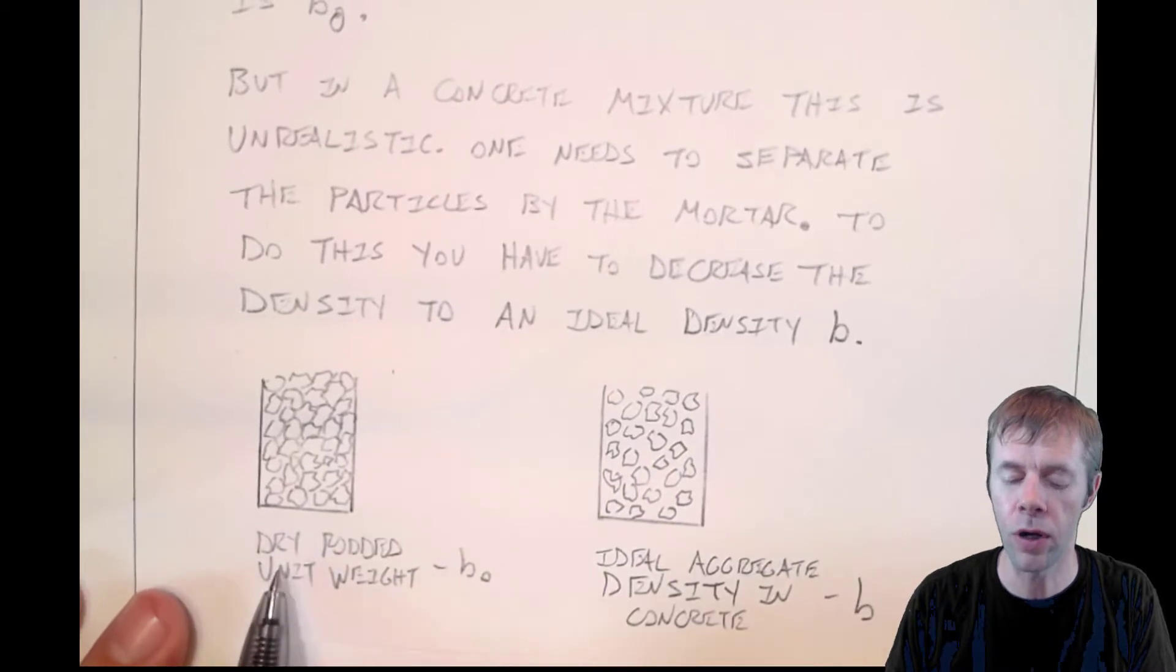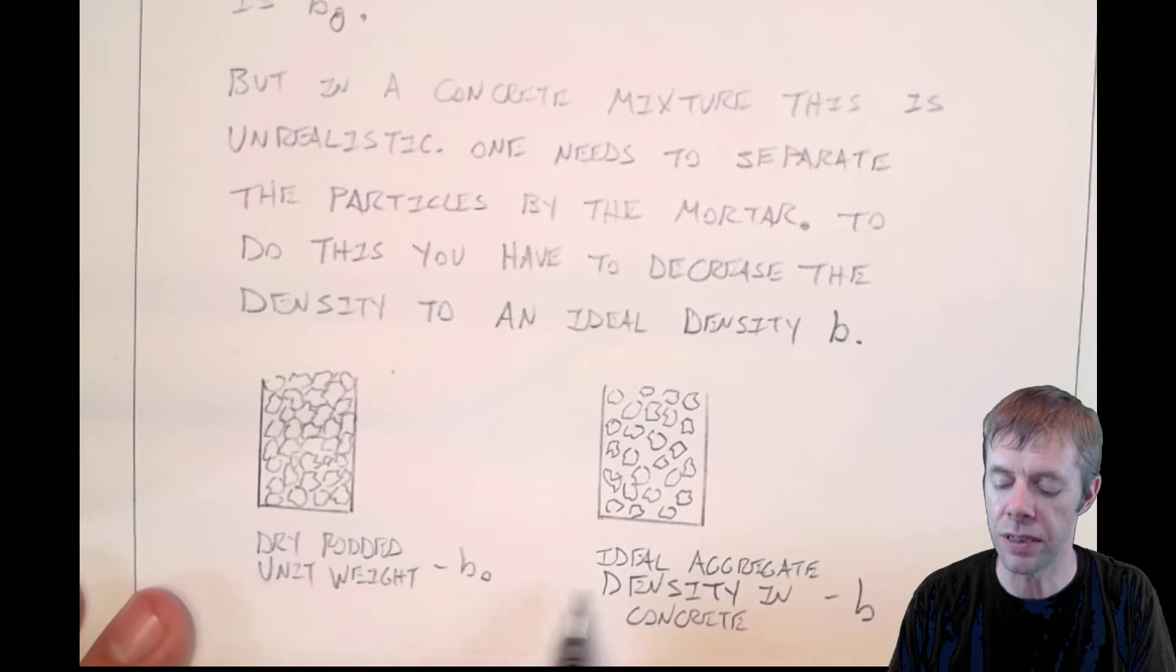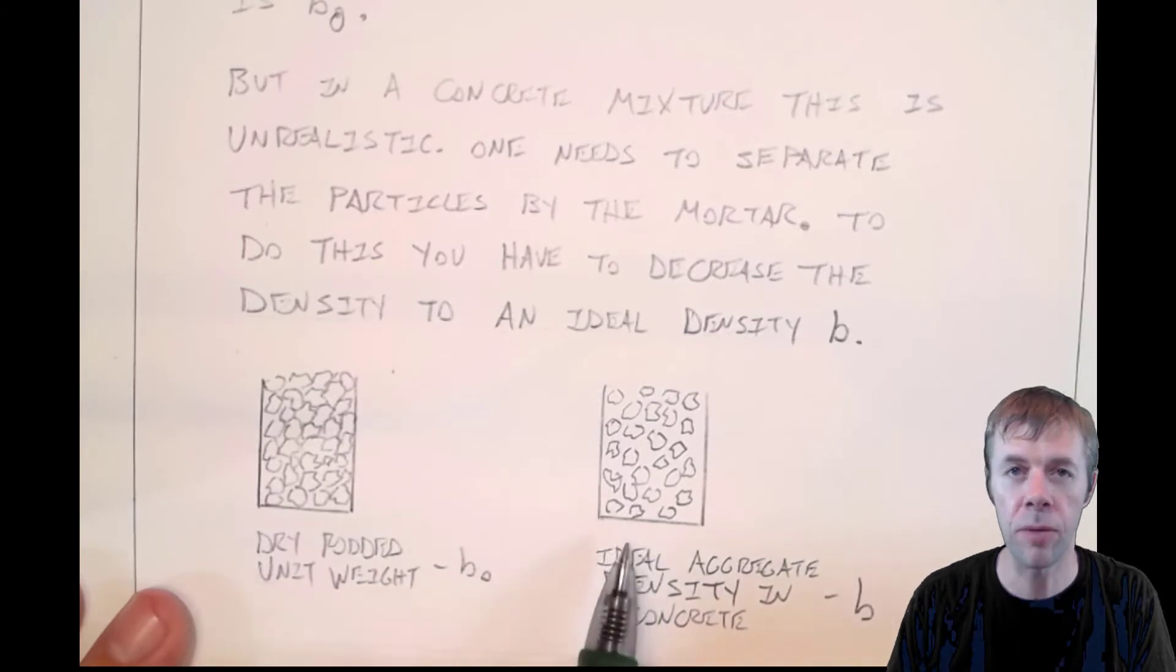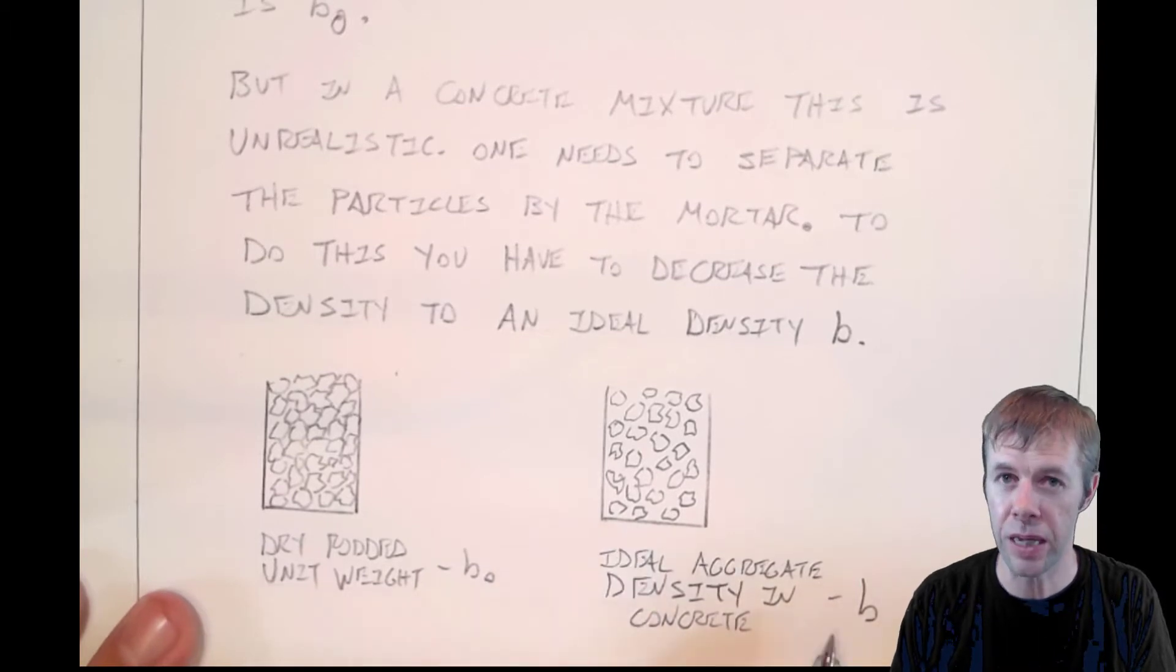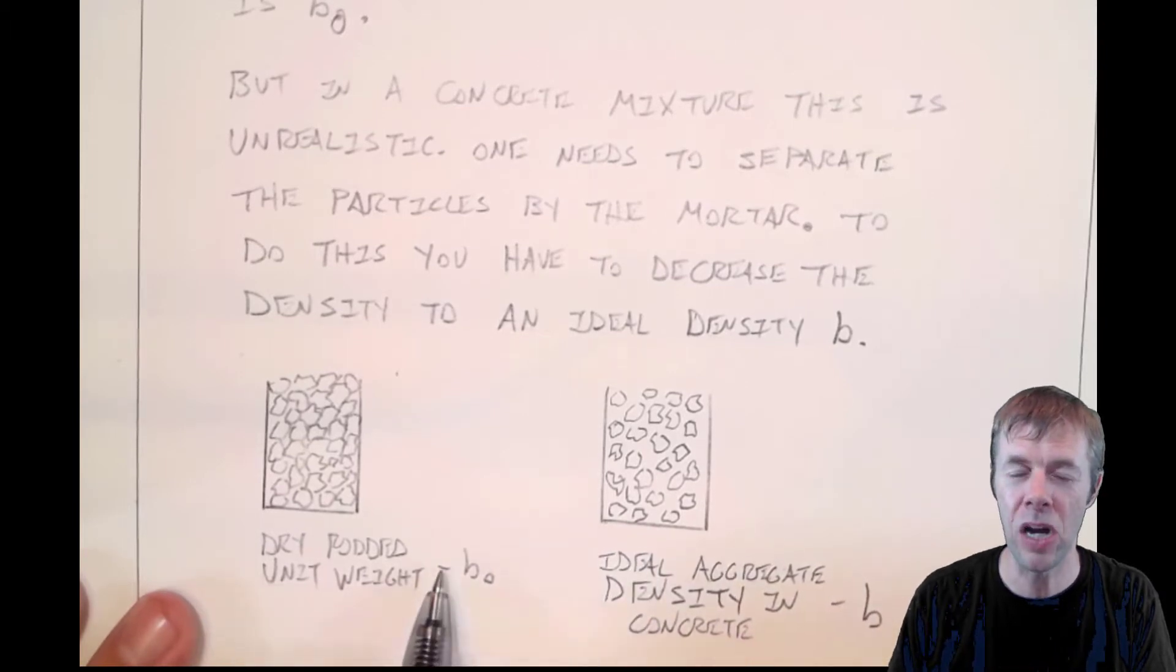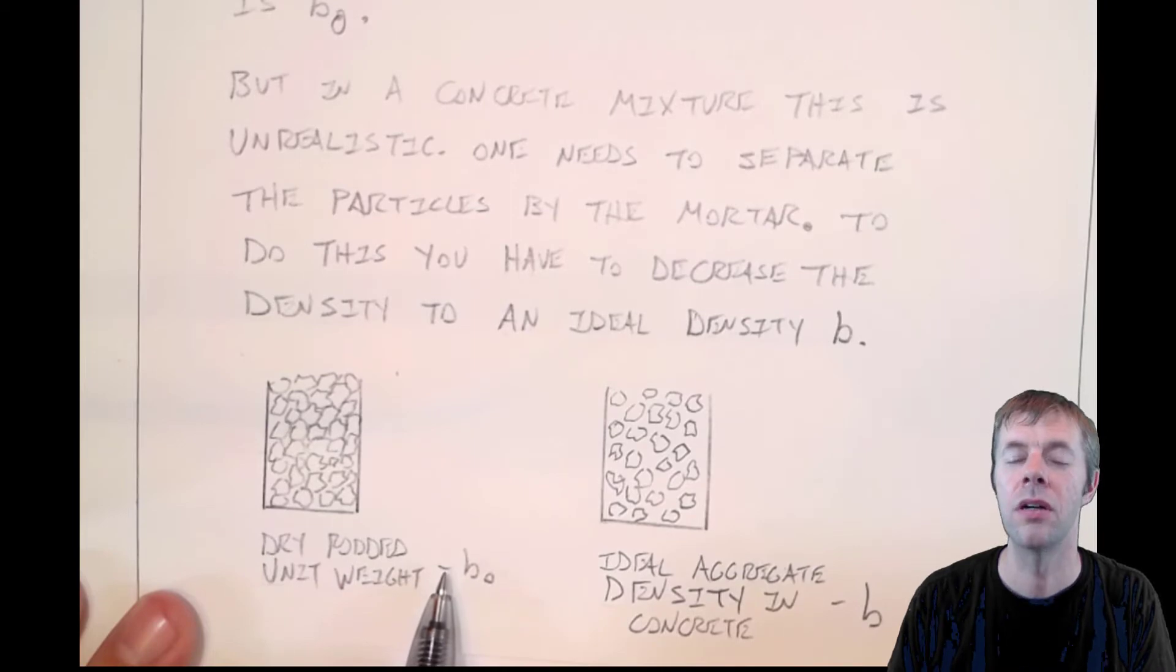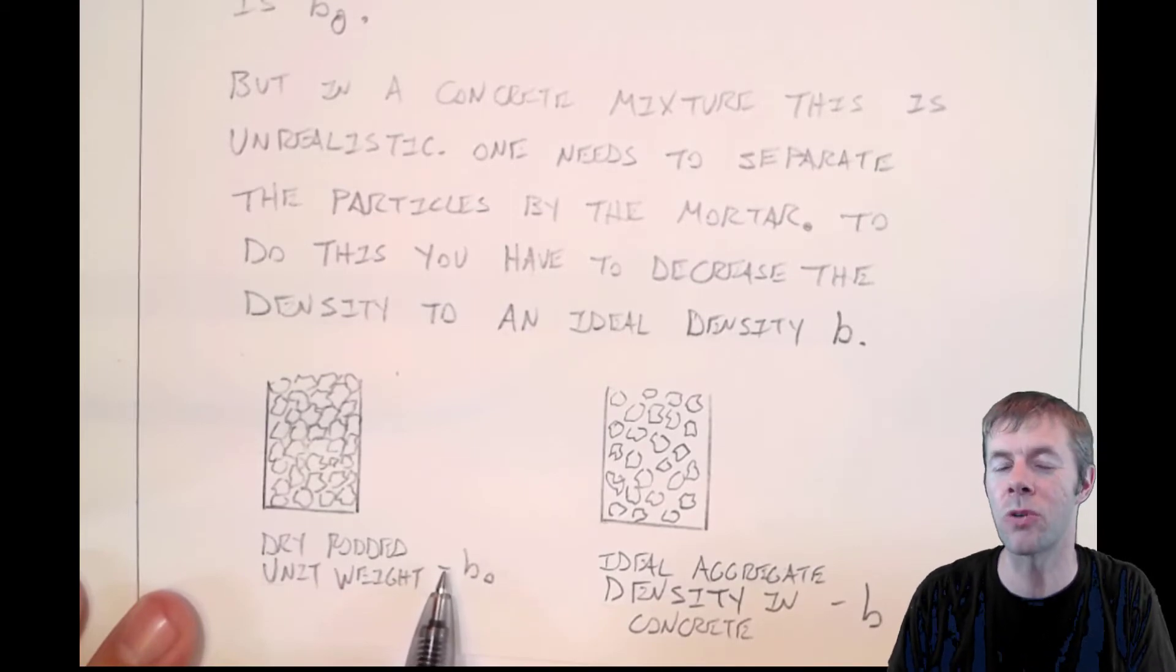If this didn't make any sense: this is what they measured—this dry rodded unit weight. Beat all the rocks in. And then this ideal density is these rocks separated apart at some distance, B. This is where this B divided by B naught concept comes from.